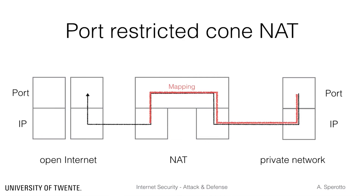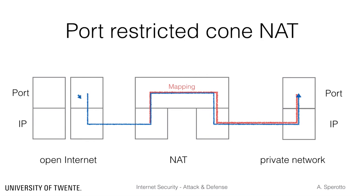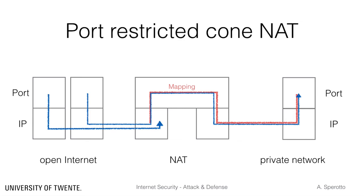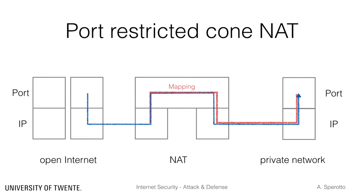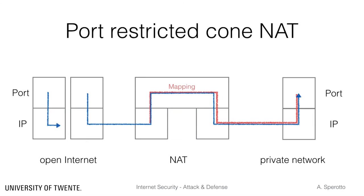If the NAT also restricts traffic to a previously-contacted IP port pair, then we talk about a port-restricted-cone NAT. Traffic from a previously-contacted IP port pair is allowed, but traffic from that same IP but from a different port is blocked, and so is traffic from a different IP. It is important to notice that the mapping between the private network IP port and the external NAT IP port will remain the same each time the internal IP port is used to contact any destination on the open Internet. If the same private network IP port is used to contact another host on the open Internet, then that traffic will also be allowed using the same mapping.